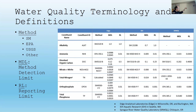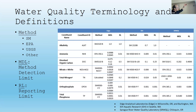We're going to talk about MDL and RL. We have these constituents in this table — alkalinity, ammonia, dissolved organic carbonate, and others. There are three labs here: EDGE in Corvallis, IEN in Seattle, and SRWQL, which is the Klamath Tribe's lab up in Chiloquin. The methods are listed with abbreviations, and then you'll see MDL and RL. MDL — method detection limit — that means I can find it.